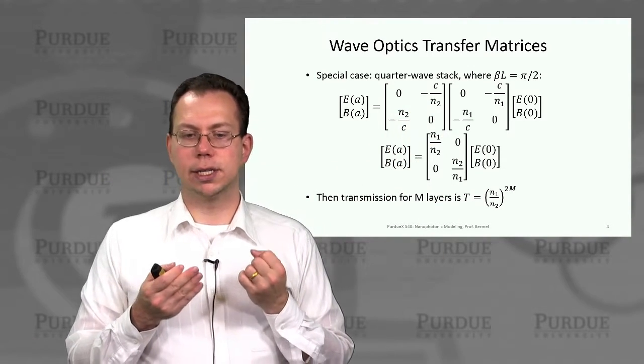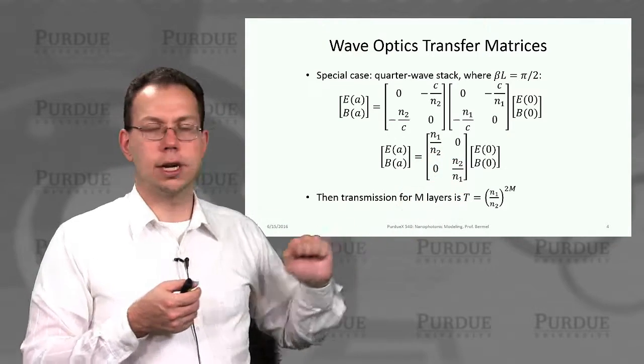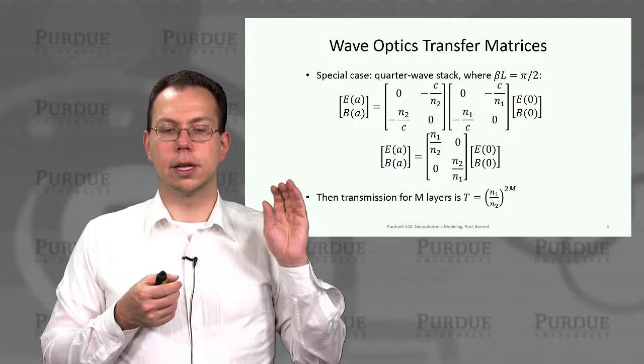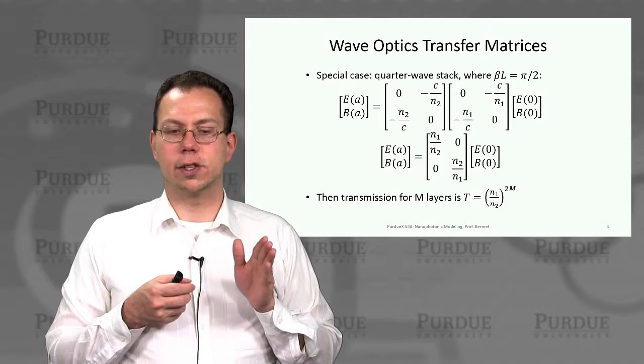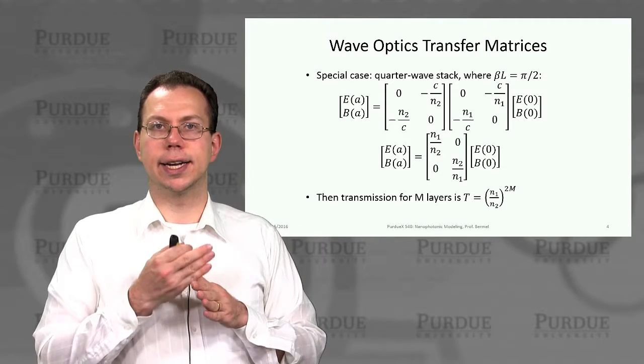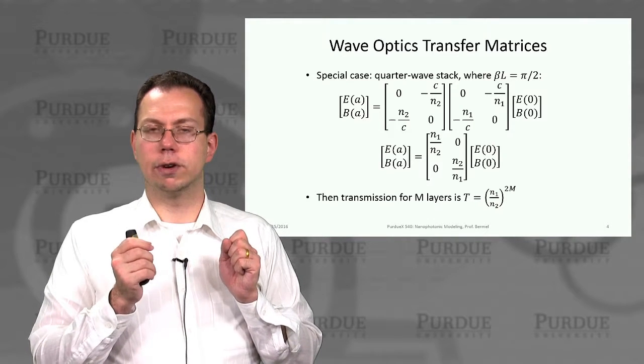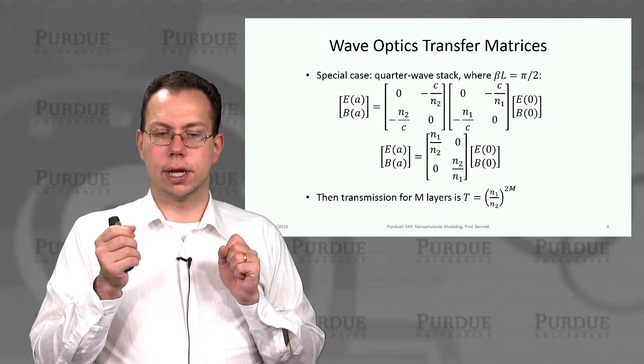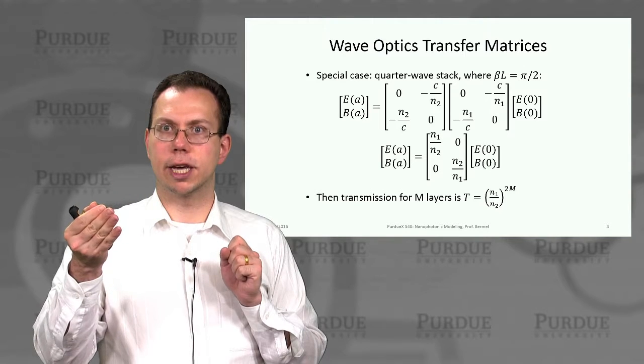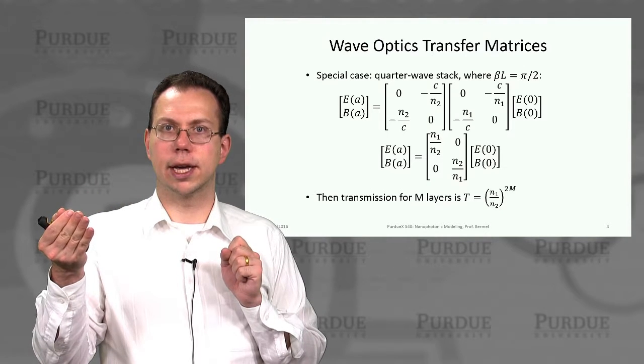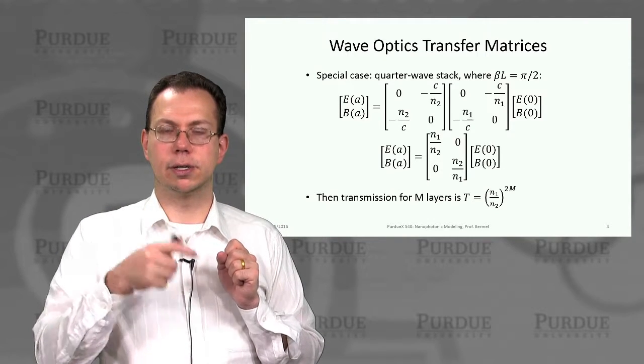And then we can actually then put in the numbers for this phase. And then that gives you a pair of matrices that look like this. And then when you composite those matrices, then it actually becomes something as simple as the quotient of the refractive index in one direction, and then the inverse in the other direction. And so then that actually tells you that the transmission, if you had m of these bilayers, would be n1 over n2 to the 2mth power. And so you get n1 over n2 to the mth power because there are m layers, but then you get another factor of 2 in the exponent because the transmission is based on the power, not the field value.